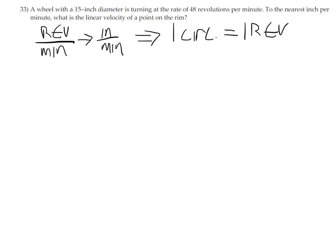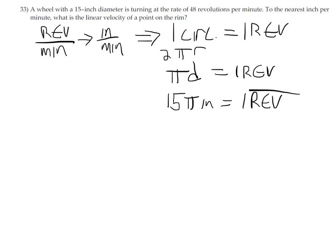This is where it's useful to use the fact that one circumference equals one revolution. The circumference formula is either 2πr or, in our case, πd, since we're given diameter. Often they give you the diameter, but if they give you a radius, it's nice to know both. So we know πd equals one revolution. d being 15 inches, 15π inches equals one revolution. This conversion factor is the key to going from revolutions to inches, from angular velocity to linear velocity.